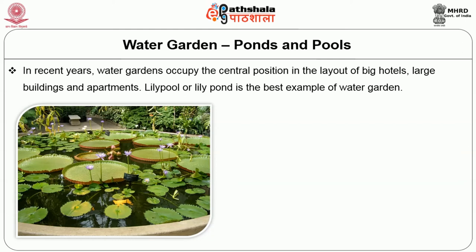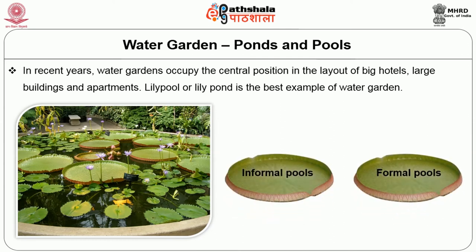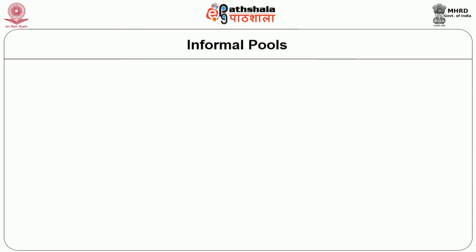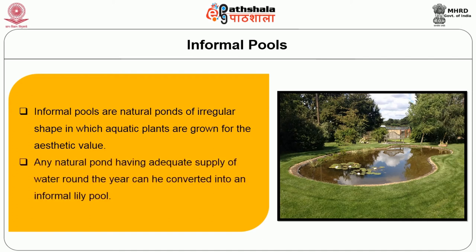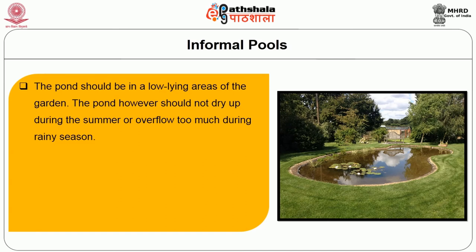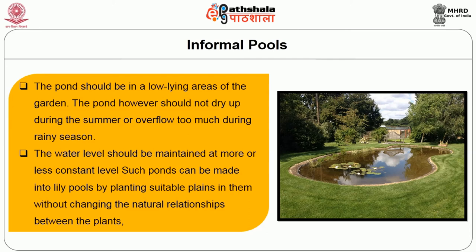The lily ponds are of two types: informal pools and formal pools. Informal pools are natural ponds of irregular shapes in which aquatic plants are grown for aesthetic value. Any natural pond with adequate water supply around the year can be converted into an informal lily pool. The pond should be in a low-lying area of the garden and should not dry up in summer or overflow during the rainy season — water level should be maintained at a more or less constant level. Such ponds can be made into lily pools by planting suitable plants without changing the natural relationship between the plants.